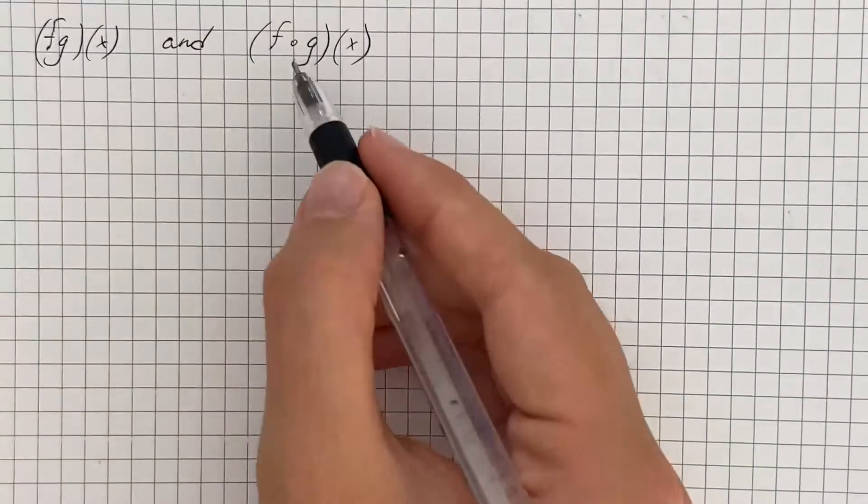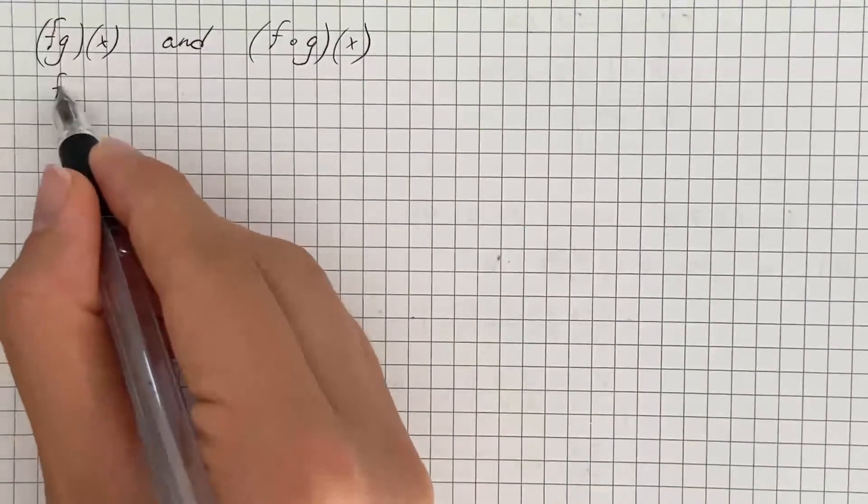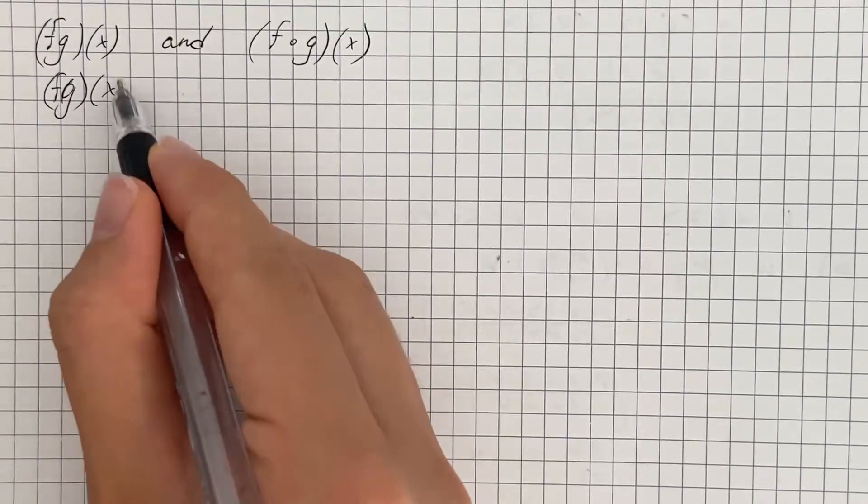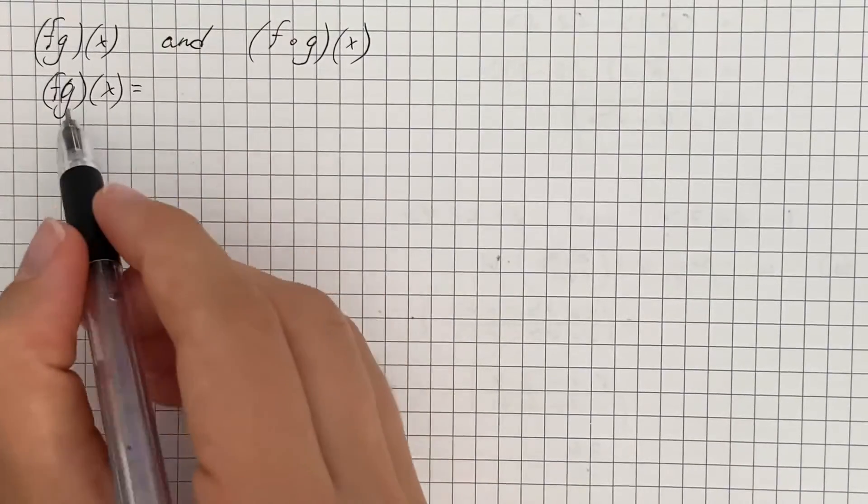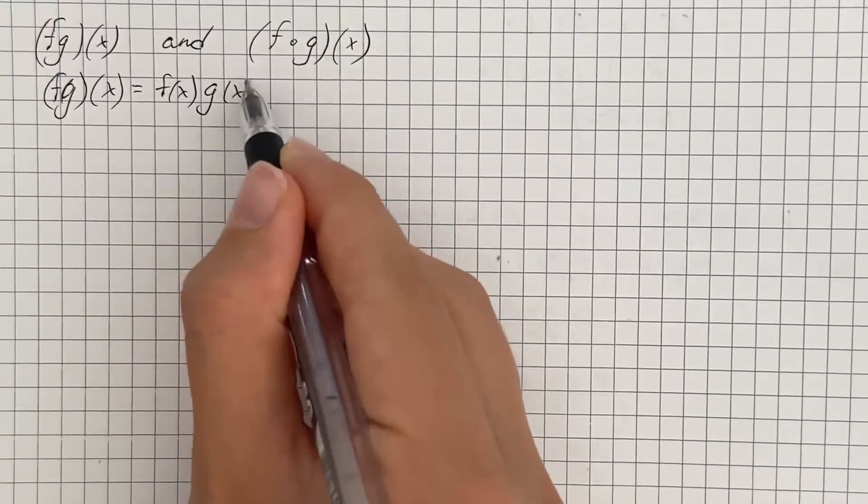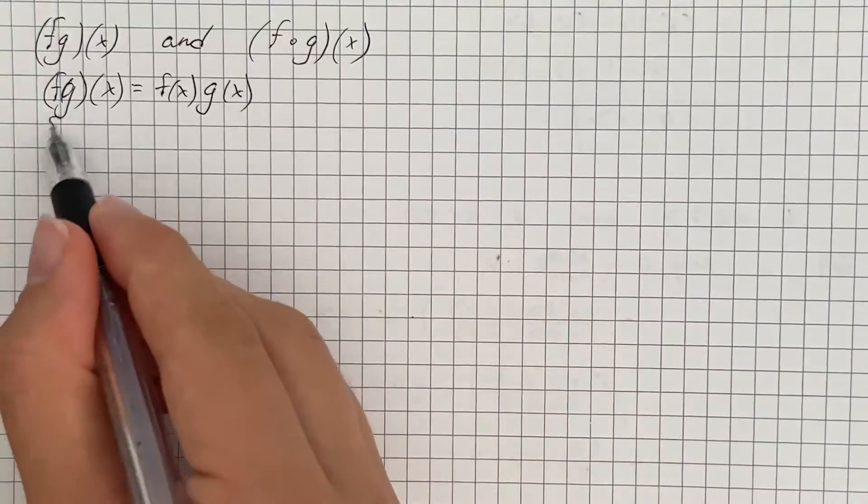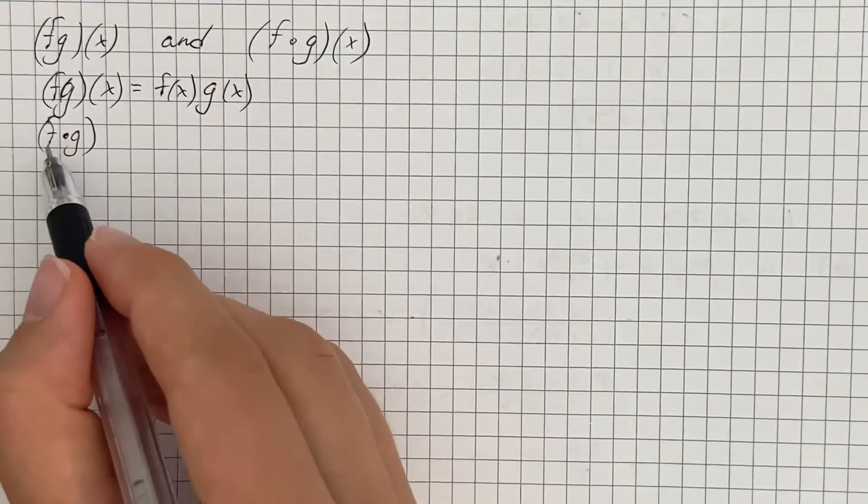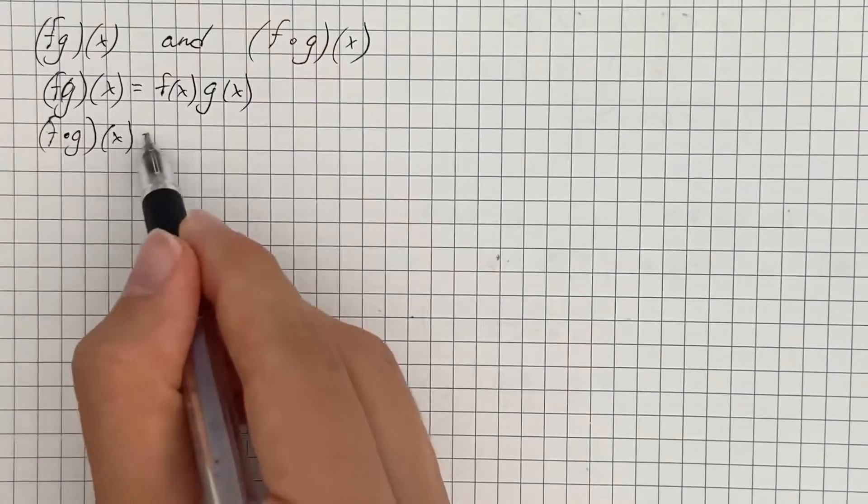The difference between these two formulas. The first one denotes the product of two functions f and g, and we can write this as f times g. And the second one denotes the composition of two functions f and g, and can be written as f composed with g.